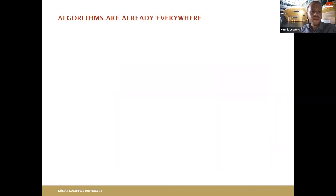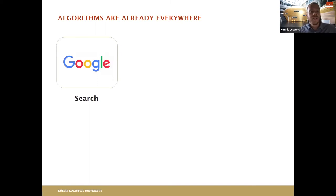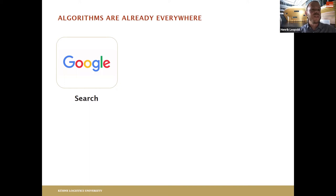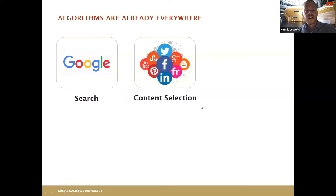Algorithms are everywhere. If you search something on the internet using a search engine — whether it's Google or something else — you are actually searching a database. Whether you find something or not is, to some extent, up to an algorithm. If the algorithm doesn't find it for you, you won't find it. You fully trust an algorithm to work properly here.